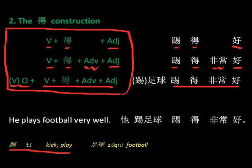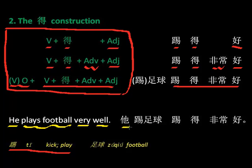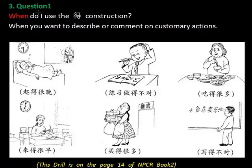第三个呢，这个部分是一样的，但是然后有一个 object：踢什么？踢足球，play football。踢足球踢得非常好。好的，现在我们来翻译一下这个句子。看一下他，he 是他。他踢足球踢得非常好。